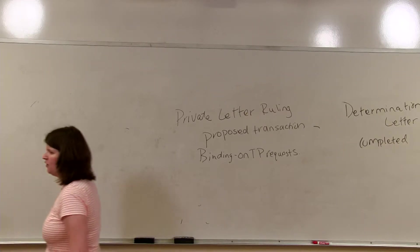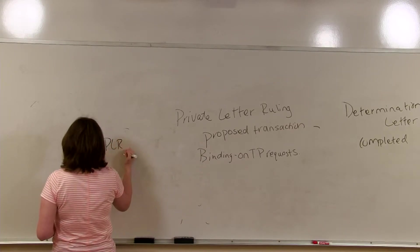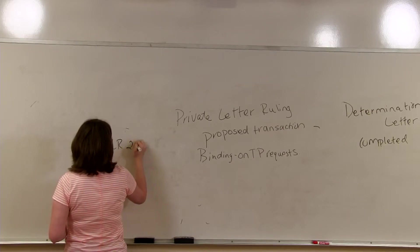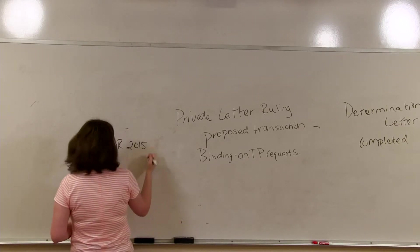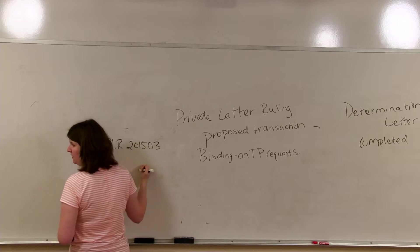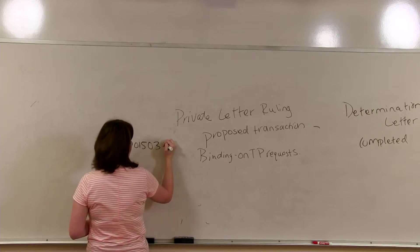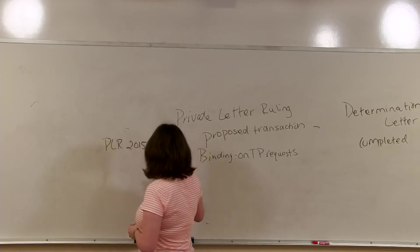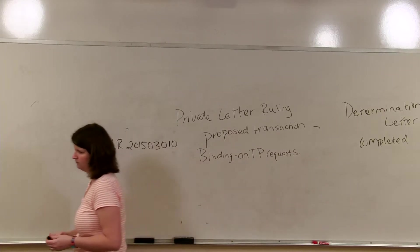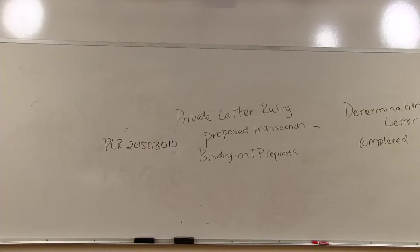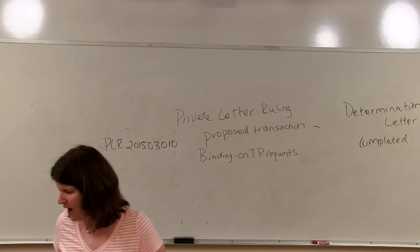So if we look on slide 18, we have the citation for a PLR. So we say PLR 2015, that means it was issued in 2015. 03, which means it was issued in the third week. And the next one, this is the example, is 0110. So it was the 10th PLR issued in the third week of 2015.